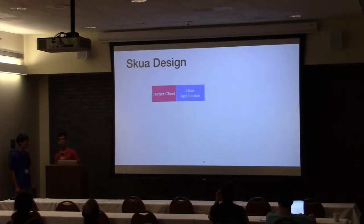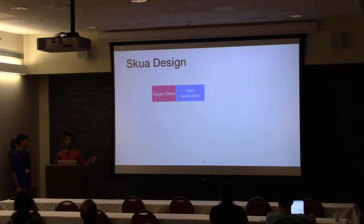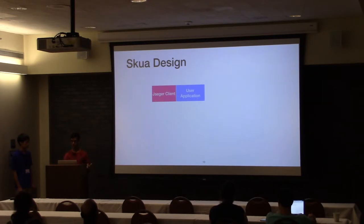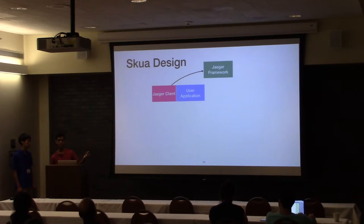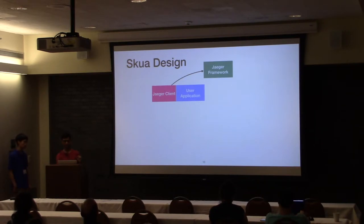So a little bit more detail on how SCUA works. Already, a user space application is running. We attach a Jaeger client to that, which collects spans and reports them to the Jaeger framework. This is already built as part of Jaeger, so we didn't have to change much in the Jaeger framework itself to make it work with our system. The Jaeger client we did have to modify, which I'll talk about in a little bit.